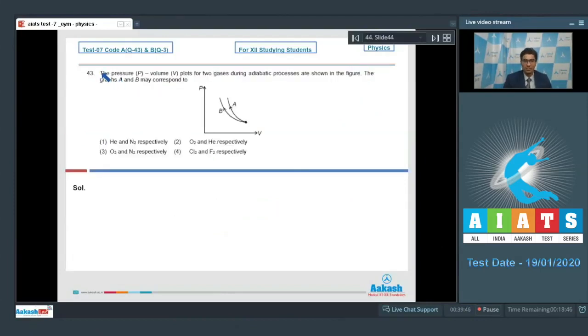Now, let us solve question number 43. Question number 43 says the pressure volume plots for two gases during adiabatic processes are shown in the figure. The graphs of A and B may correspond to.